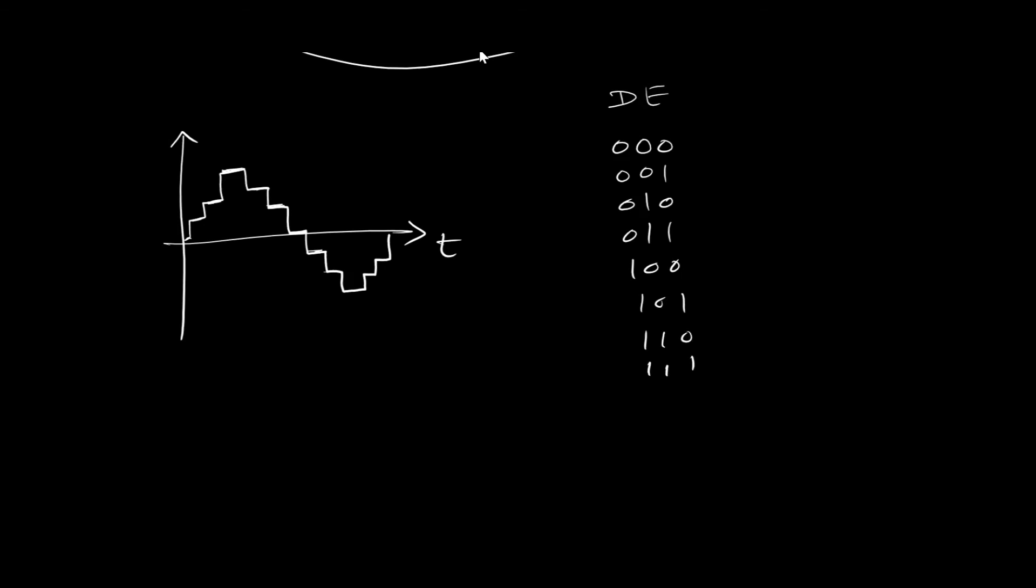Let us suppose this level I am assigning 1 0 0. This level is 1 0 1, and this level is 1 1 0. Now coming to the negative side, let's say this is 0 0 0. This level is 0 0 1, this is 0 1 0. There is one more level - we can assign this one with this bit combination.